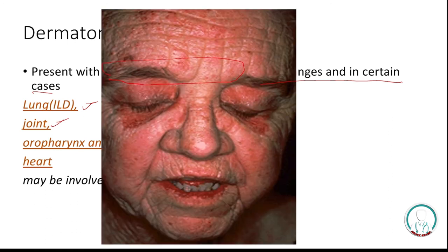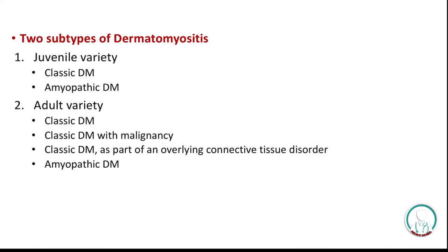The classic heliotrope erythematous rash is present in dermatomyositis. Varieties include: juvenile — classic and amyopathic; adult — classic dermatomyositis and classic dermatomyositis with malignancy, since malignancy is more common in older age. There is also dermatomyositis with overlap syndrome — in addition to dermatomyositis, the patient may develop SLE or scleroderma.